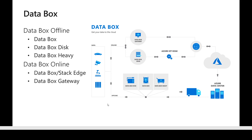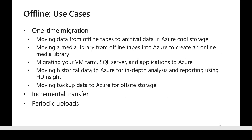If you look at the slides, there are offline options. We have three different products: Data Box Disk, Data Box Heavy, and the regular Data Box. We normally ship these products to an Azure data center. There is another category of Data Box services called online, which includes two products: Data Box Edge, also called Azure Stack Edge, and Azure Data Box Gateway. These are continuously connected to the cloud and we transfer data using these appliances continuously.